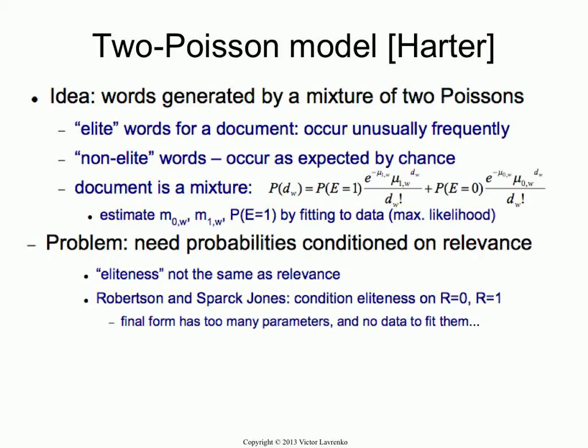The problem is the final model ends up having way too many parameters, because now you have eliteness conditioned on relevance, and depending on eliteness you have mu1 and mu0, and you have the same set of parameters for relevance — one set for non-relevant class and another for relevant class. You bump into the same problem as before: you can estimate something if you have examples of relevant documents, but if you have no examples, you can't estimate anything — just like in the classical model where they had to assume query words occur in half the relevant documents.